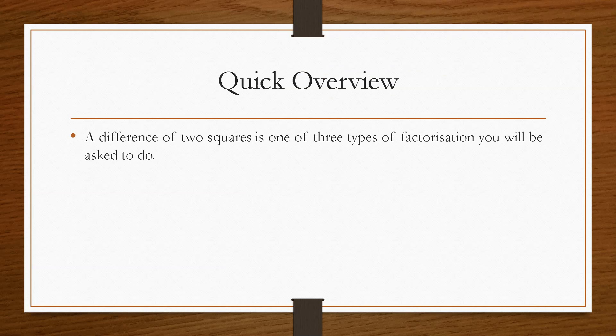So we take a quick overview. A difference of two squares is one of three types of factorisation that you will be asked to do. Now the other two being a common factor and a trinomial. I will put a link in the description to both of those videos that you can have a look at separately.